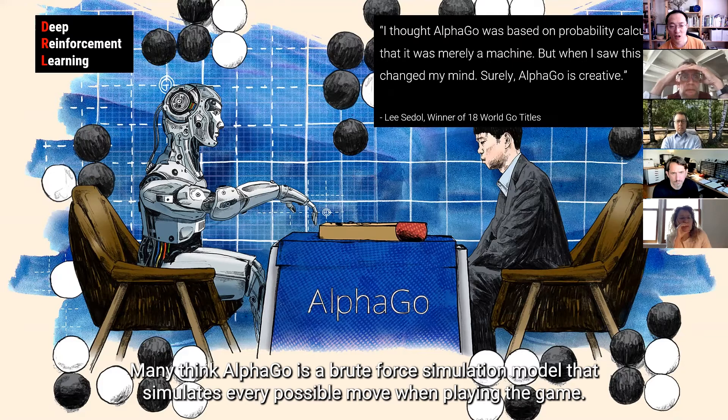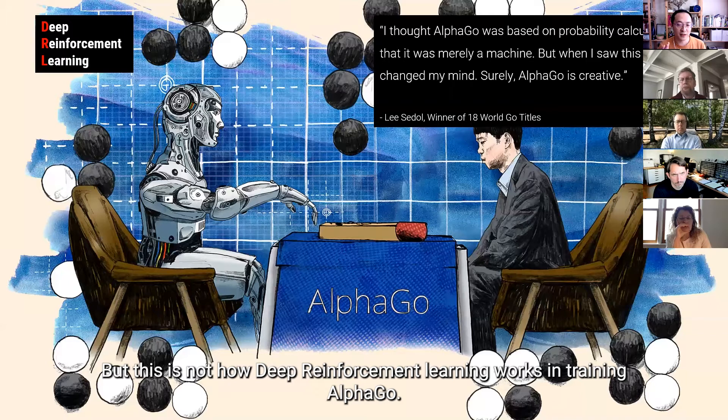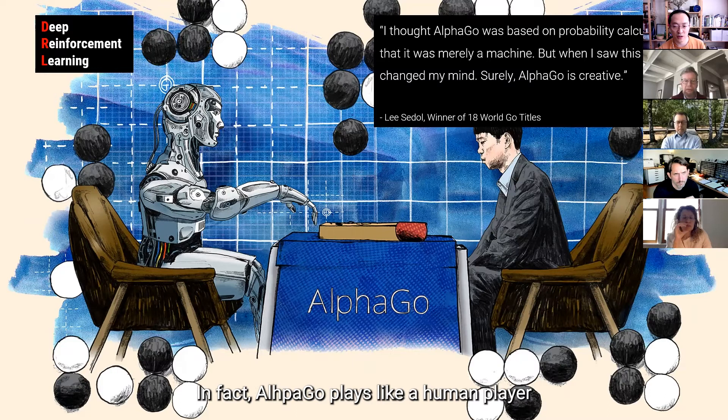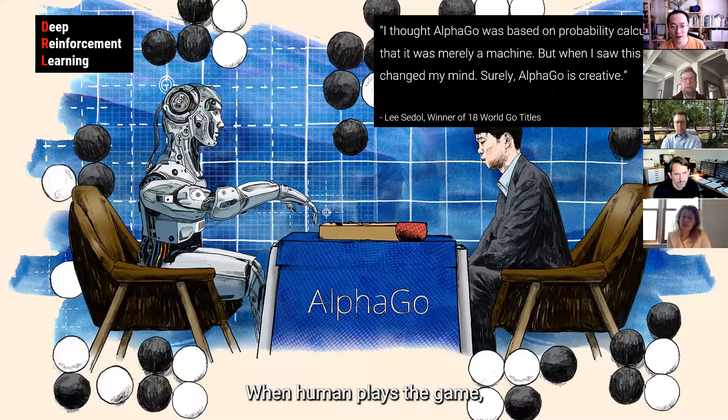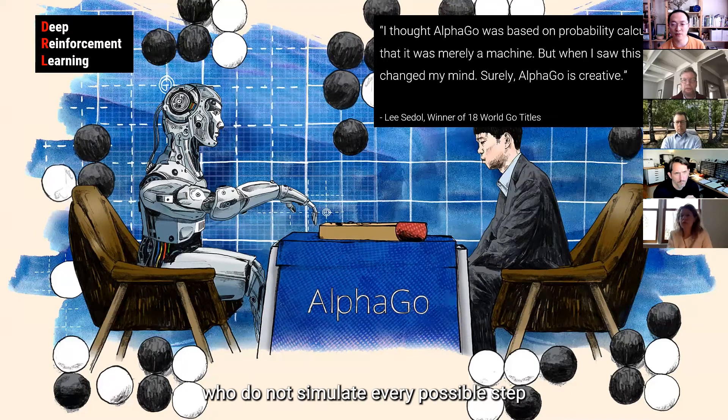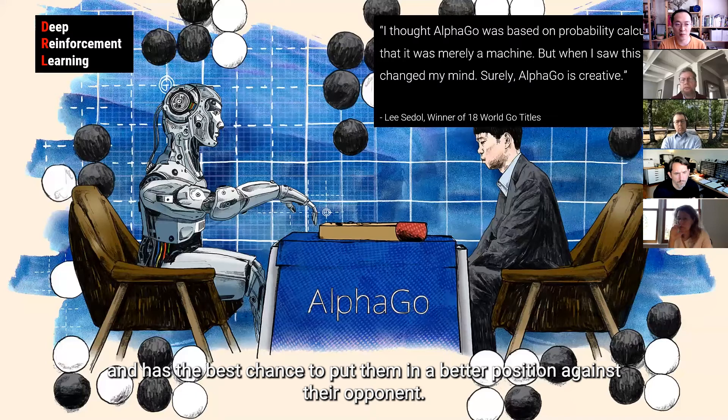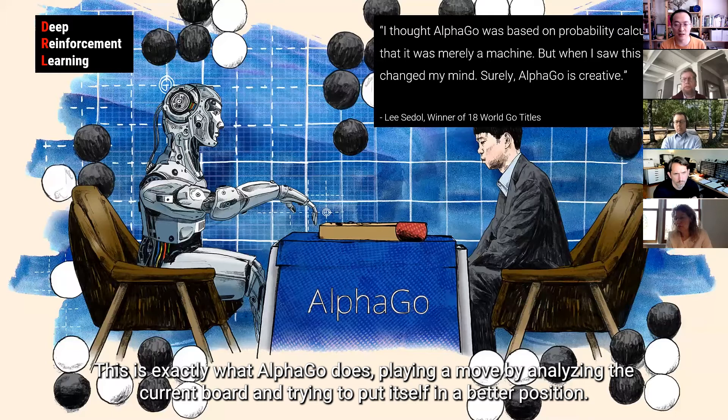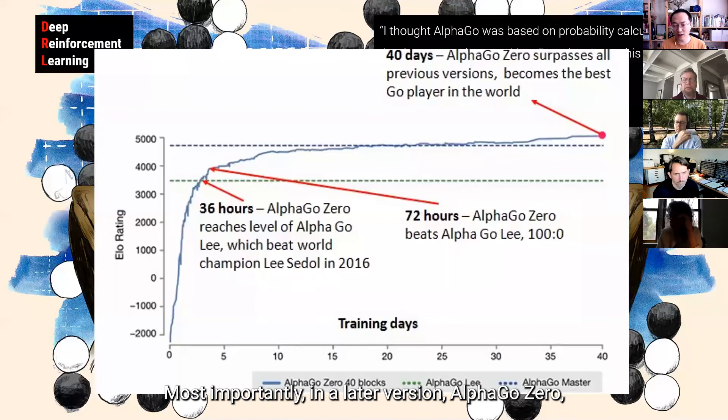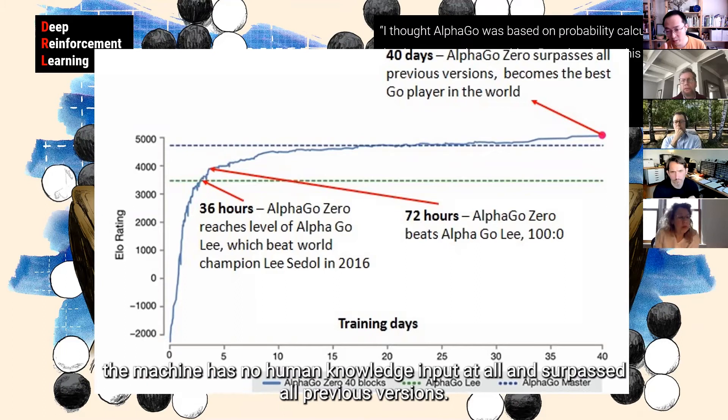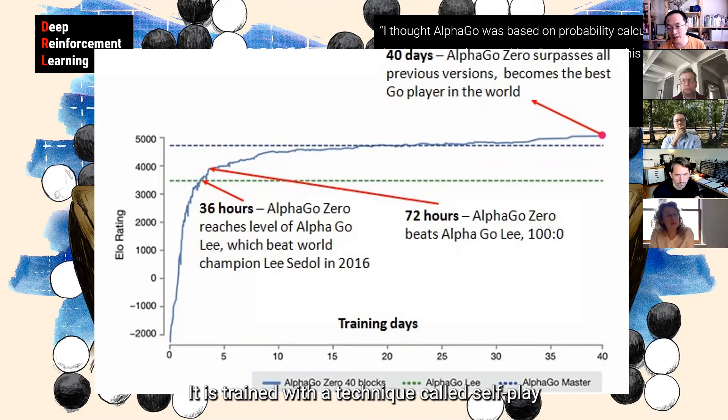So, however, both post-humanism and research on machine intelligence over the past few years have challenged us to come up with a different way to conceptualize machines. So, I'm going to talk about this example. So, many think AlphaGo, an AI trained to play the game of Go, was a brute force simulation model that simulates every possible move when playing the game. But this is not how this deep reinforcement learning works in training AlphaGo. So, in fact, AlphaGo plays very much like a human player. So, when you think about it, when a human plays a game of Go, they do not simulate every possible step, but only play the move that we feel right at the moment and has the best chance to put us in a better position against our opponents. And this is exactly what AlphaGo does, playing a move by analyzing the current board and trying to put itself in a better position.